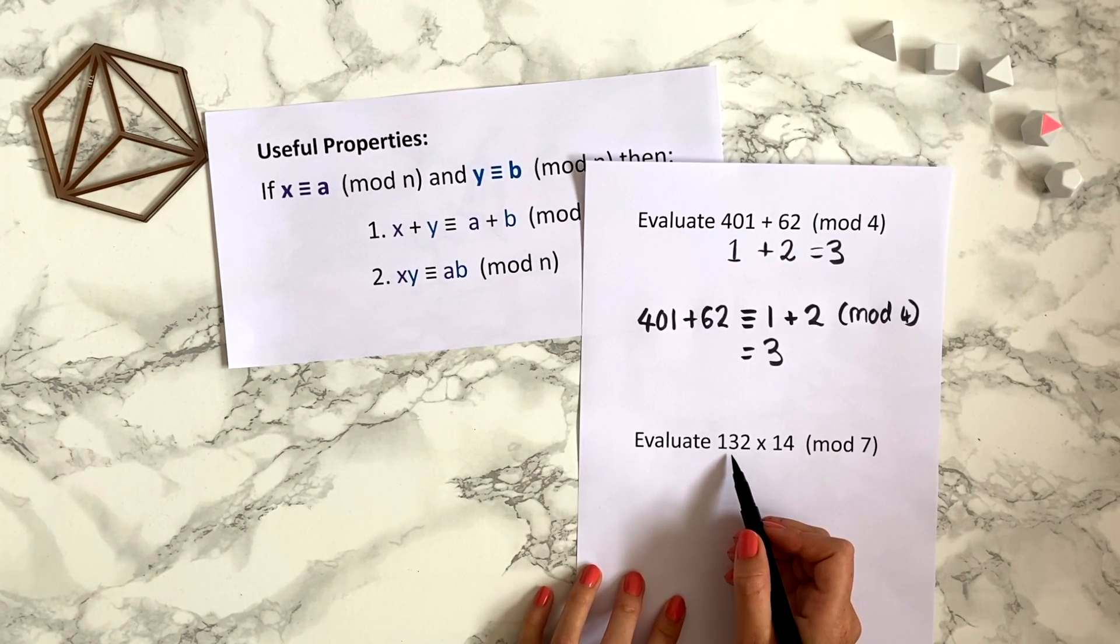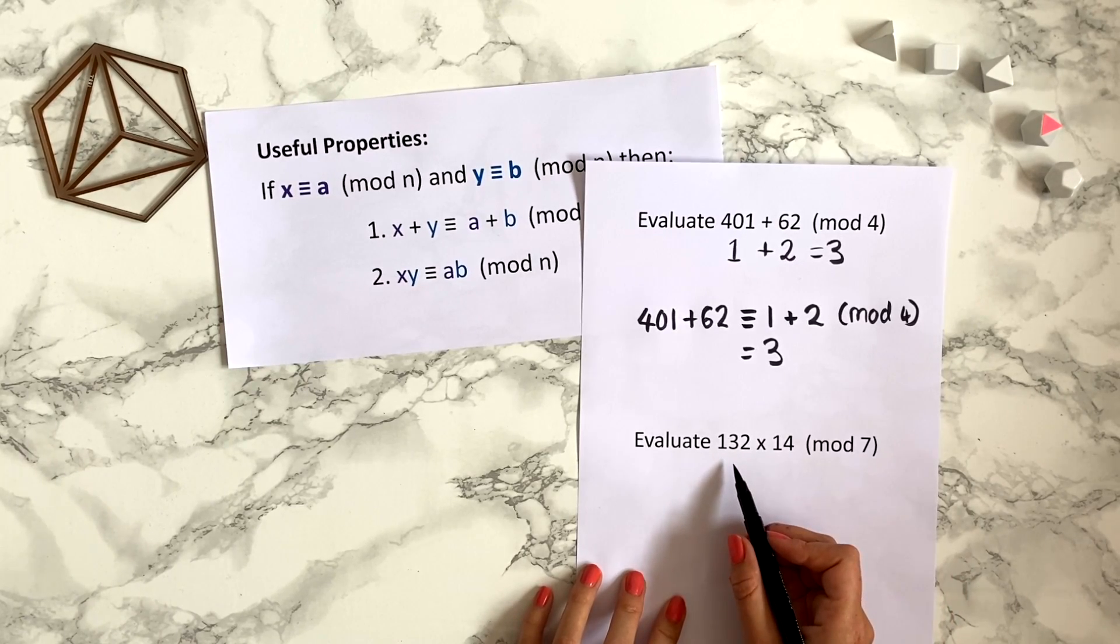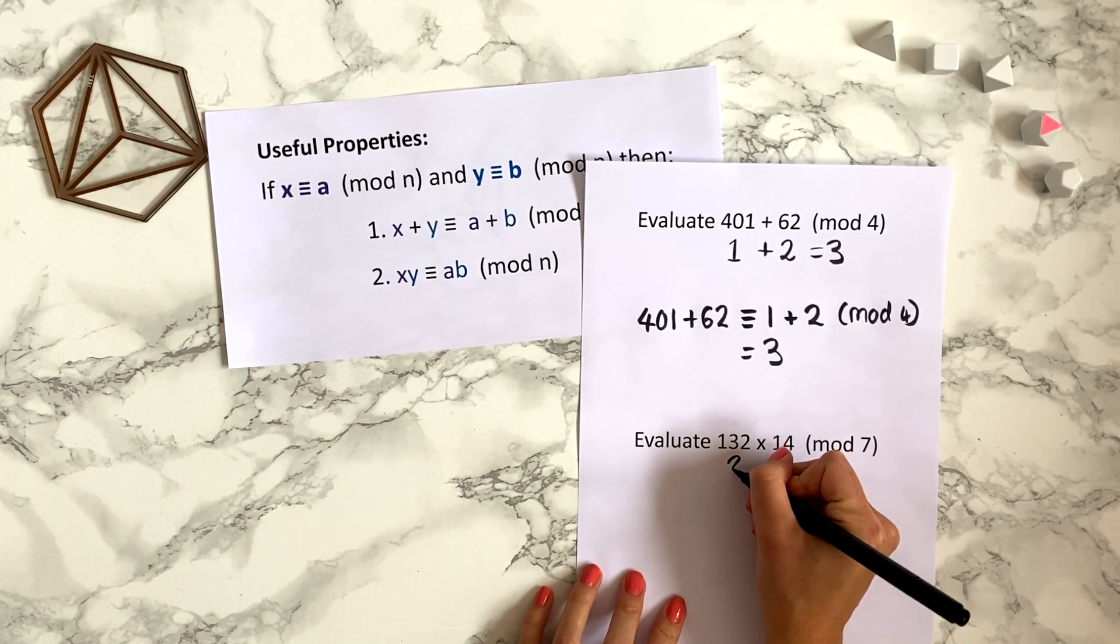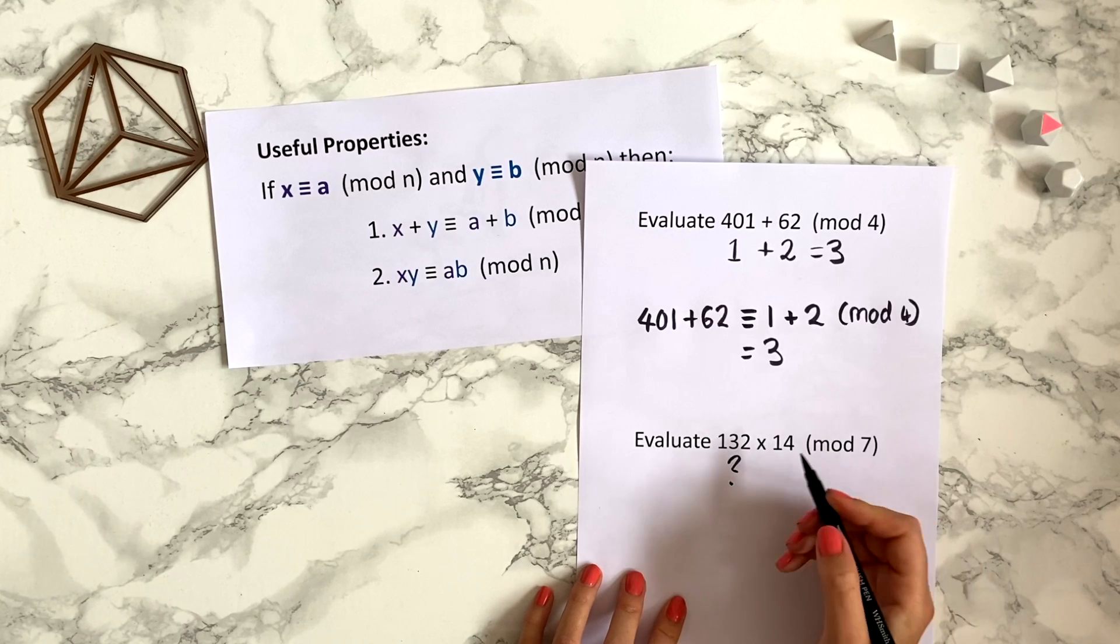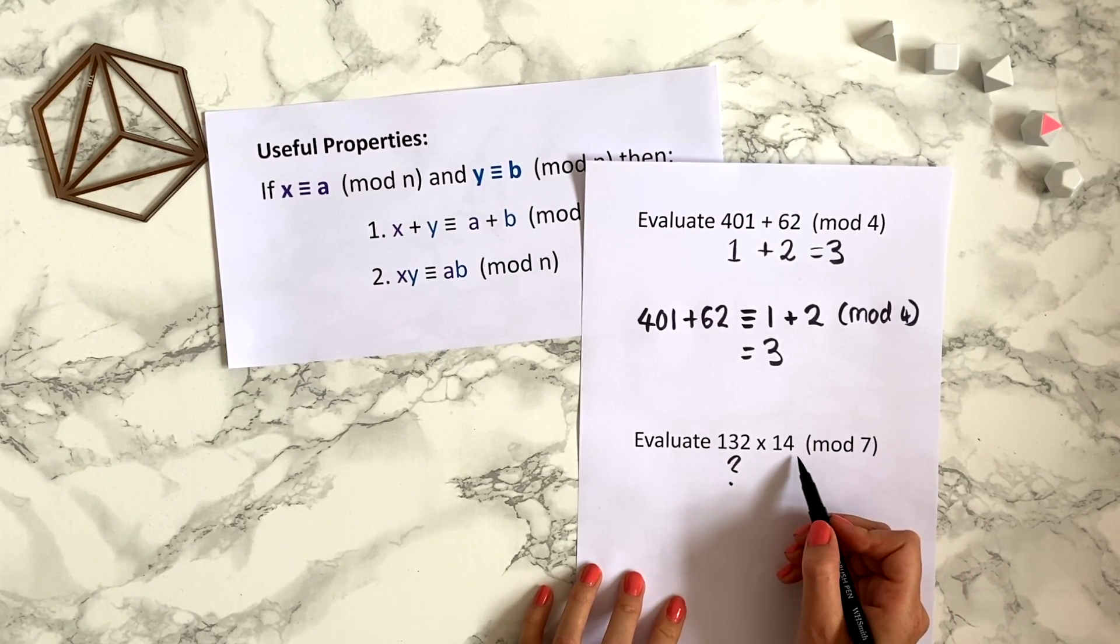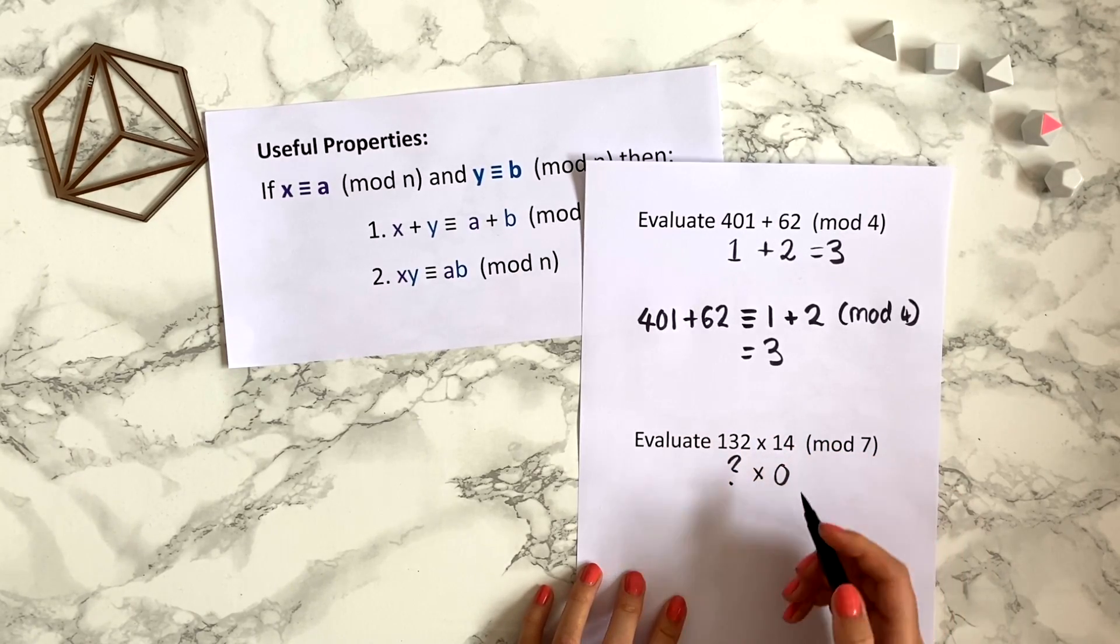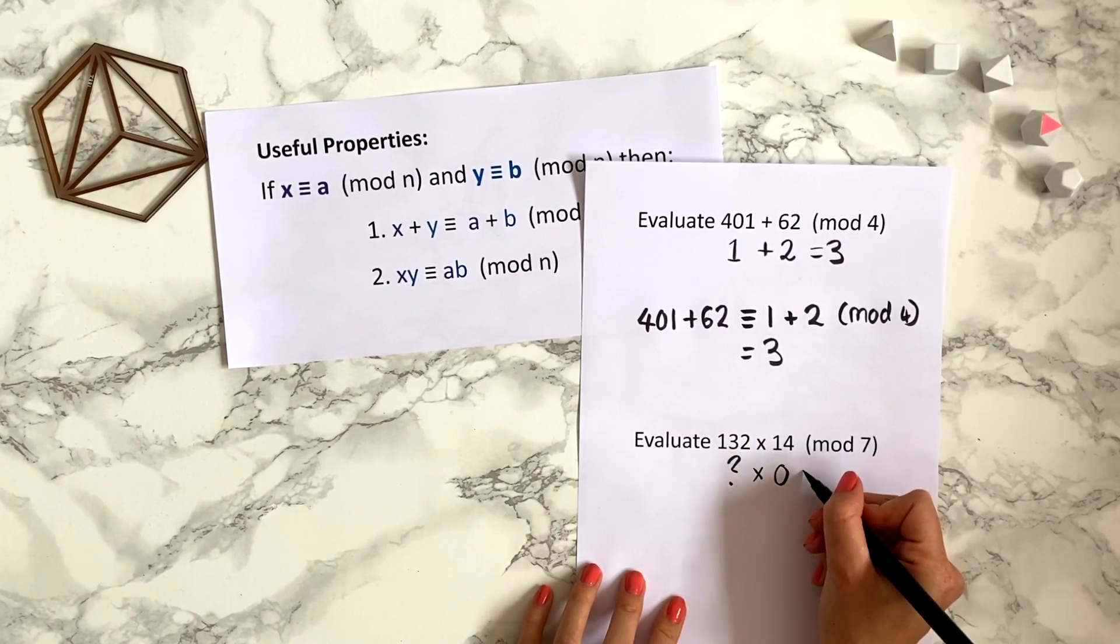So first we want 132 mod 7. Well actually I don't really care what that is and I'll show you why, because 14 modulo 7 is 0 because 14 is divisible by 7,